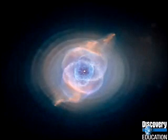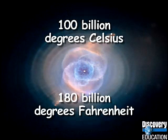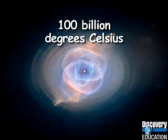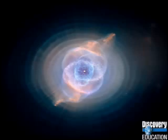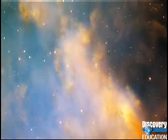Then the star explodes in a violent explosion called a supernova. The light of a supernova could be brighter than a million suns. The temperature can exceed 100 billion degrees Celsius — greater than 180 billion degrees Fahrenheit — which is hot enough to fuse iron atoms to make even heavier elements. The elements, gases, and dust of the star explode into space, forming a new nebula, which could become the birthplace for a whole new group of stars.